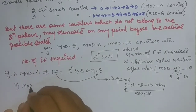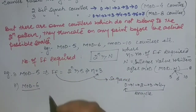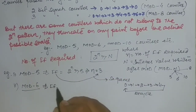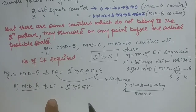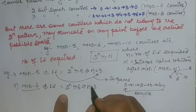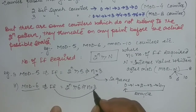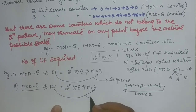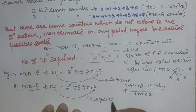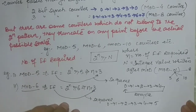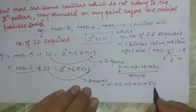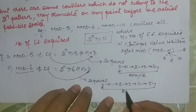For mod-6: applying 2^n ≥ 6, we again get n = 3, so 3 flip-flops are required. The sequence will be 0, 1, 2, 3, 4, 5, and again recycling to its original state.